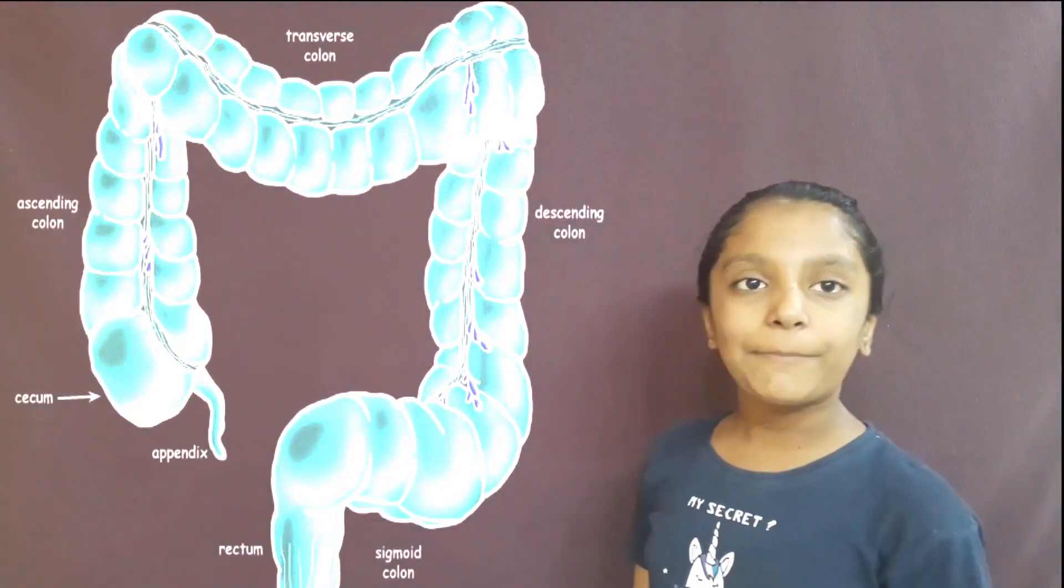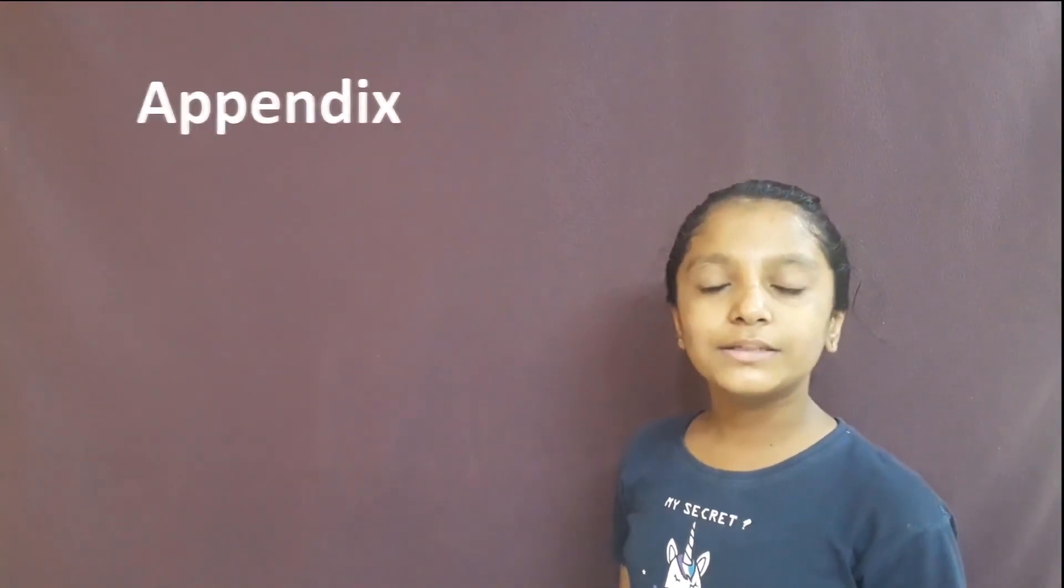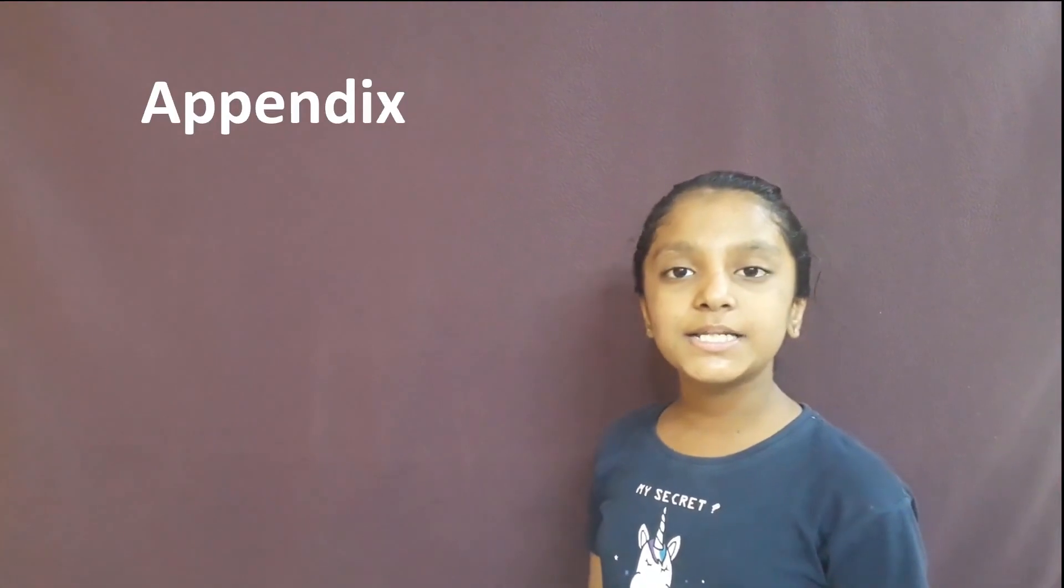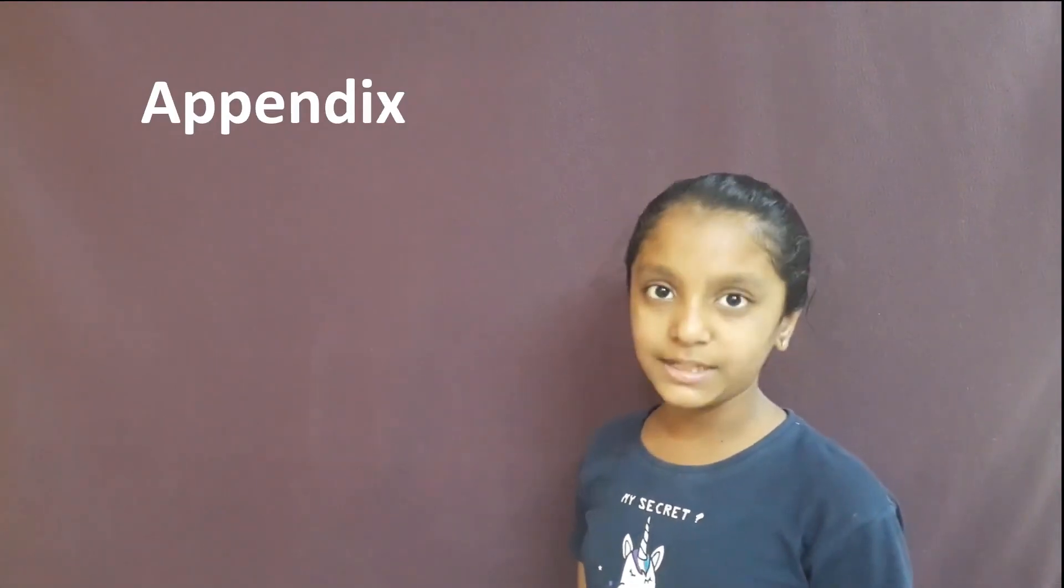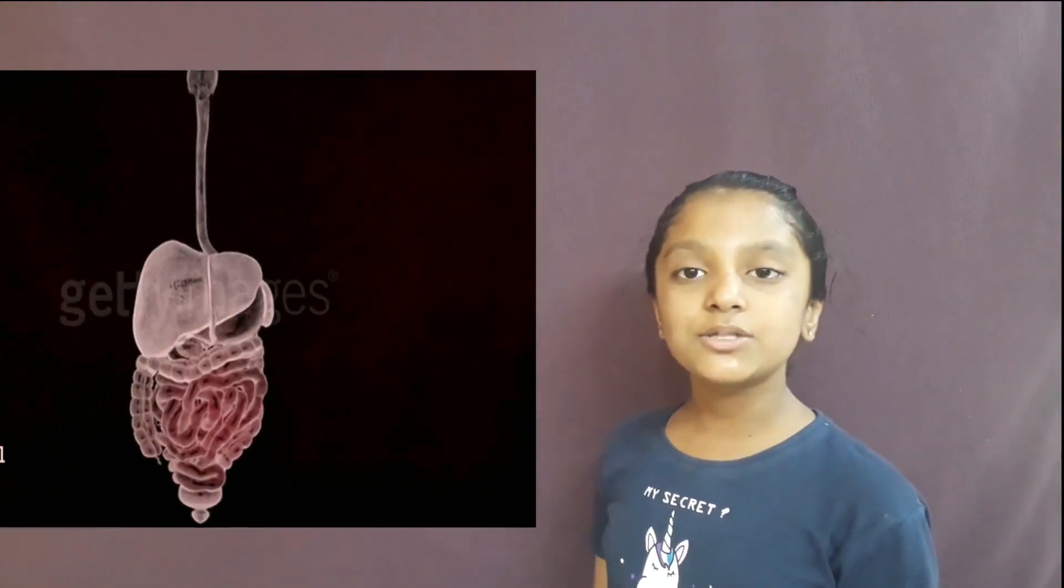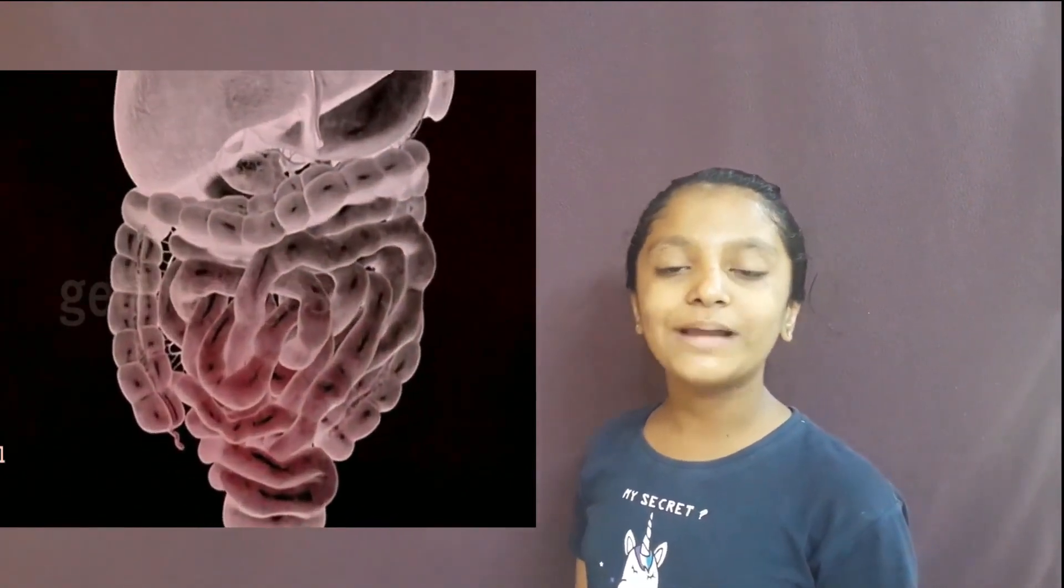Now the food enters the appendix. The appendix sits at the junction of the small and large intestine. It is 4 inches. It is located in the right lower abdomen. It acts like a storehouse of good bacteria. It is a useless remnant from our evolutionary past.